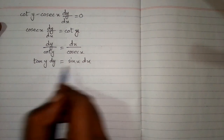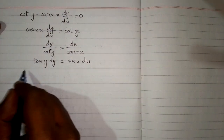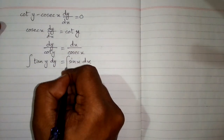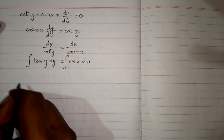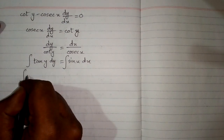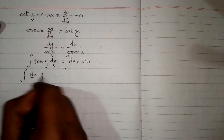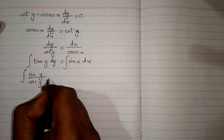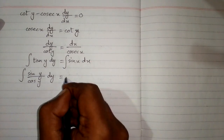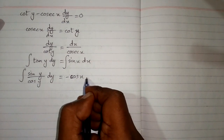This is a separable differential equation and we can find the solution by simply integrating both sides. We apply the integral on both sides. Tan y can be written as sin y upon cos y dy, and the integral of sin x is minus cos x plus c.